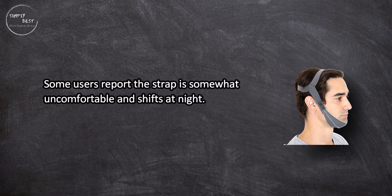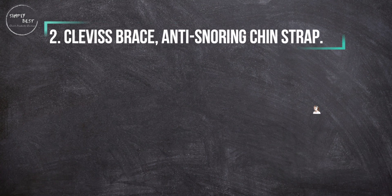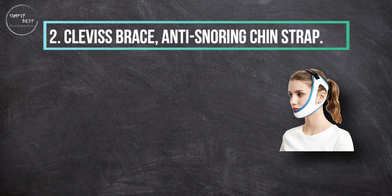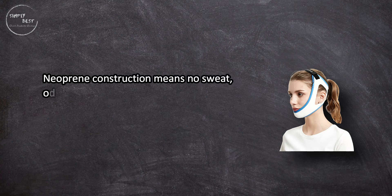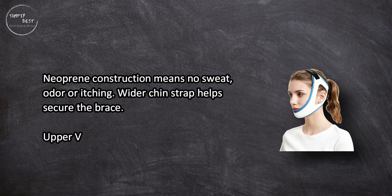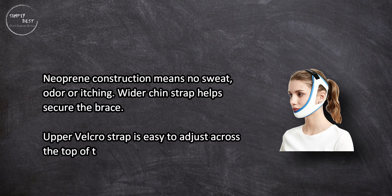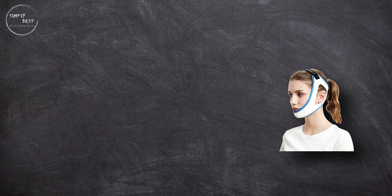At number two, Clevis Brace Anti-Snoring Chin Strap: neoprene construction means no sweat, odor, or itching. Wider chin strap helps secure the brace, upper Velcro strap is easy to adjust across the top of the head. One of the more affordable options, plus it's made from soft neoprene that cradles the jaw better than some other straps.